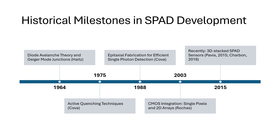Now let's take a detour through the historical development. The theory of avalanche breakdown in diodes and the ideation of current multiplication detection dates back to research by Haetz from the Shockley labs in the mid-1960s. Because of device limitations, practical devices did not come around until much later. In the mid-1970s, Kova proposed the idea of active quenching to replace passive quenching circuits, marking a leap in possible device performance. In the 1980s, with the grand development of fabrication processes, epitaxial fabrication enabled precise control over device parameters, enabling truly practical SPADs. And in 2003, contributions by Roshas and others developed the compatibility of SPADs with CMOS processing, enabling direct on-chip integration with electronic components. Later developments such as 3D stacked SPAD arrays continue to push the integration of SPAD units into high-density arrays for future applications.